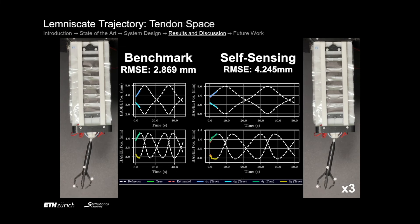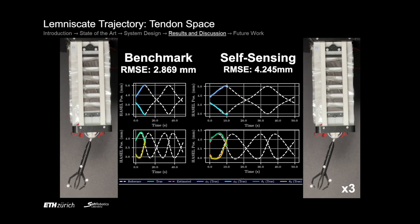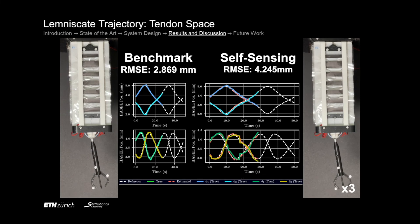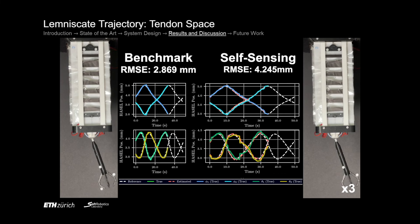Here you can see the same trajectory but now in the tendon space. You can see the reference, true and estimated HASEL displacement of all four actuators. Each row corresponds to one antagonistic configuration.